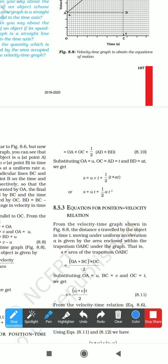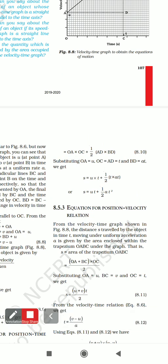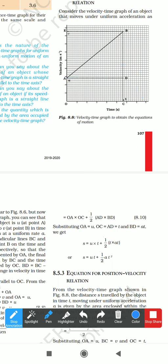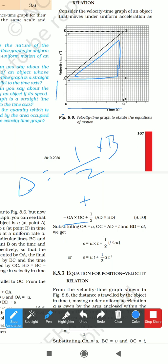The area of rectangle OADC = length × breadth = OA × OC. Then we add half the base times height for the triangle. The formula for area of triangle = ½ × base × height.